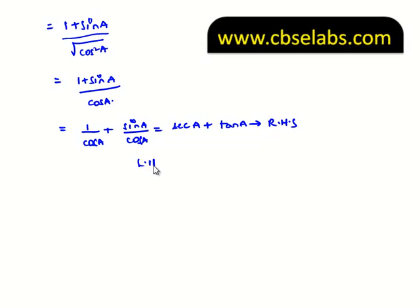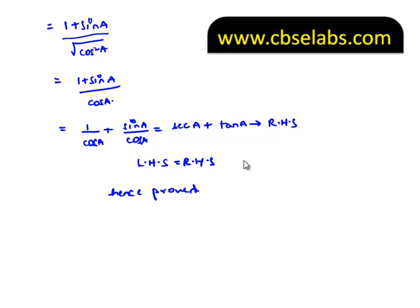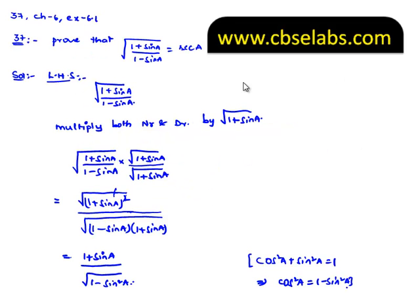This is nothing but the right hand side. Therefore, the left hand side is equal to the right hand side, and the required proof is proved: square root of (1 plus sin A) divided by (1 minus sin A) equals secant A plus tan A.